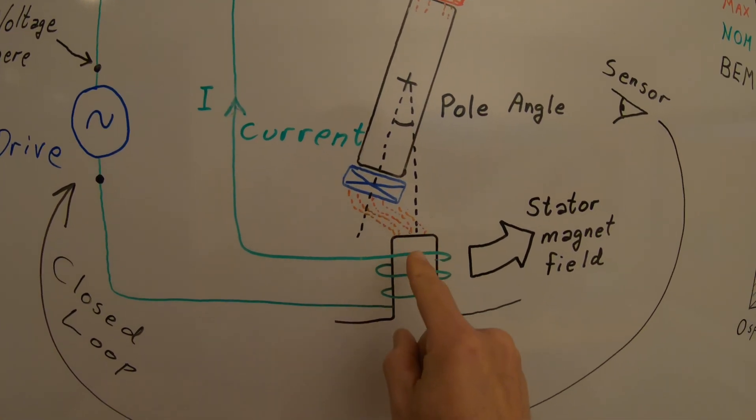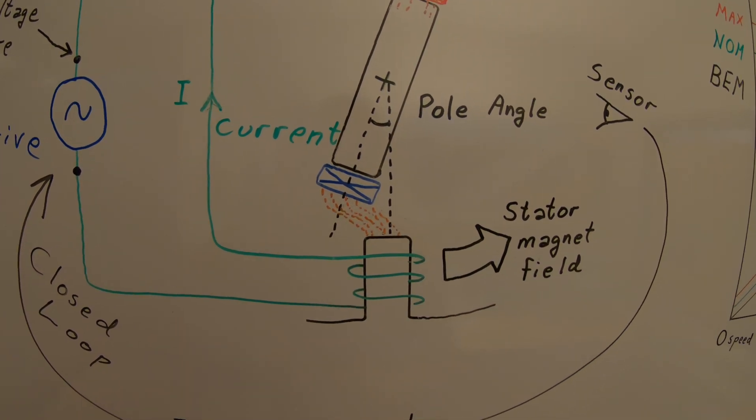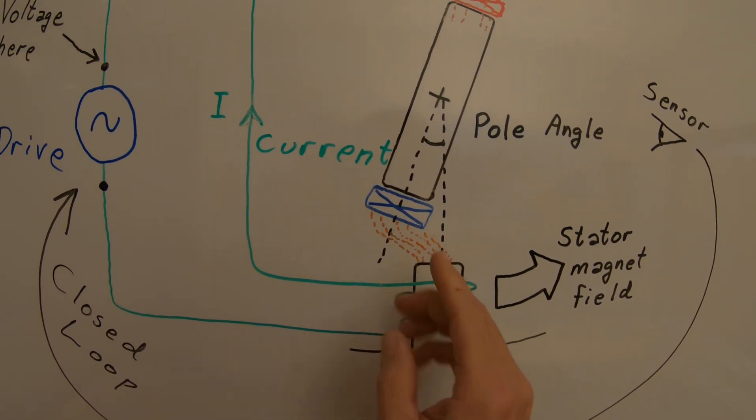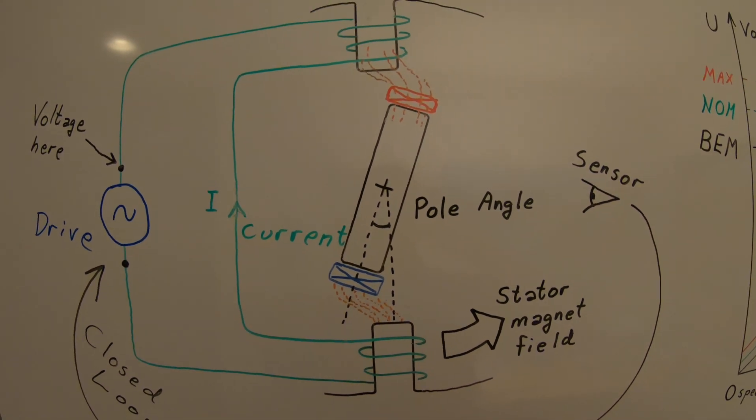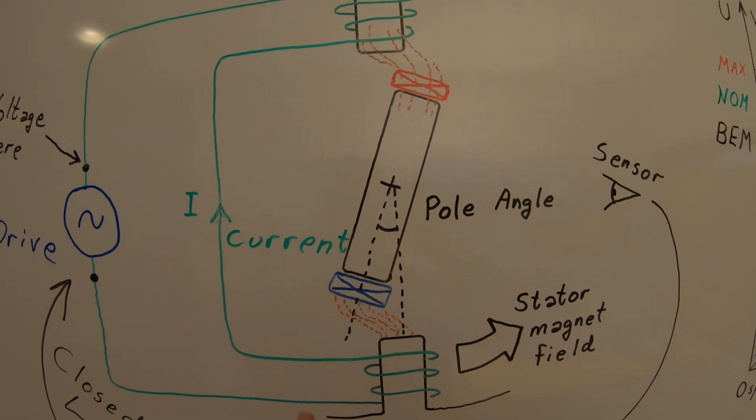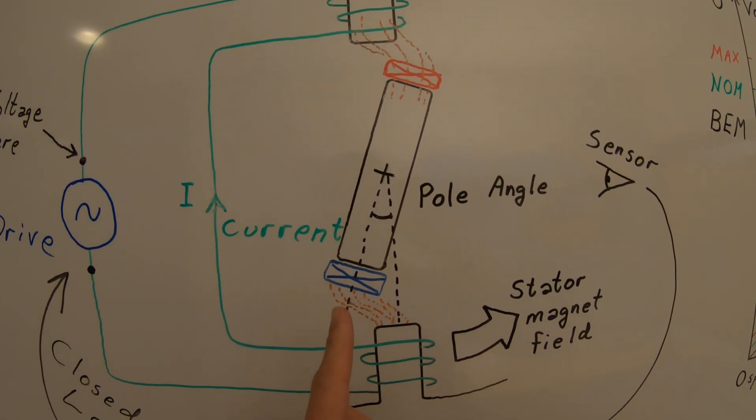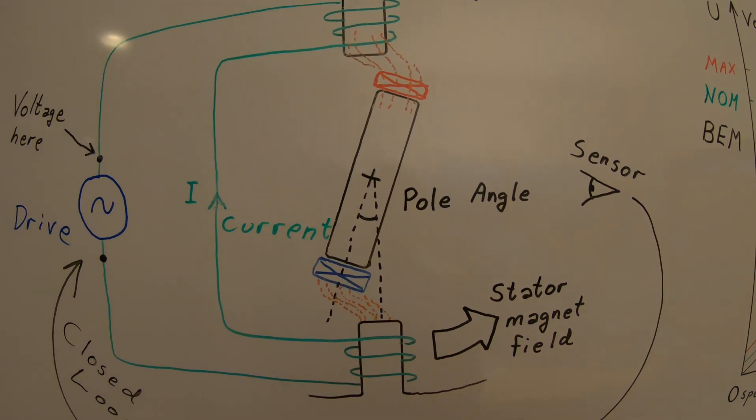Here we see that the magnets are not straight over the magnet field from the stator and there is a danger that you actually are losing it. Remember what happened with the small miniature motor? When I pull this too far it just stalled. So this must not happen. We must make sure that this pole angle is kept within its physical limits.